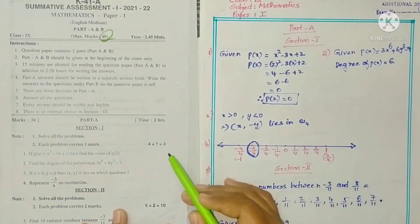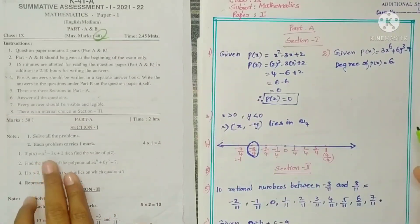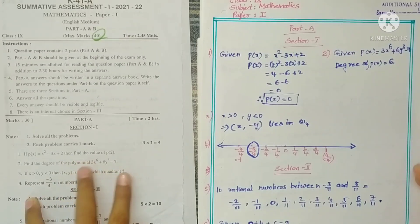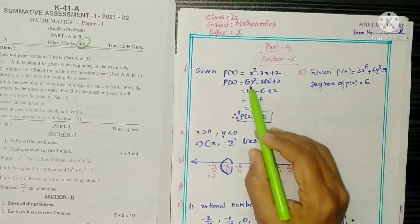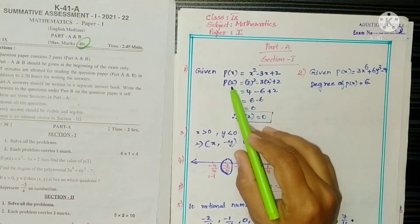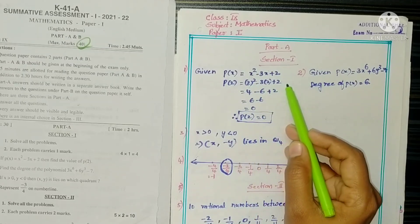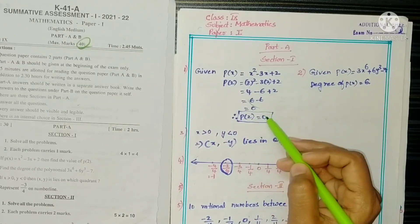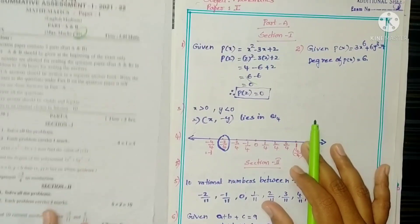Section 1, Question 1: If p(x) equals this, then find the value of p(2). In the place of x, simply substitute 2 and you will get 0.